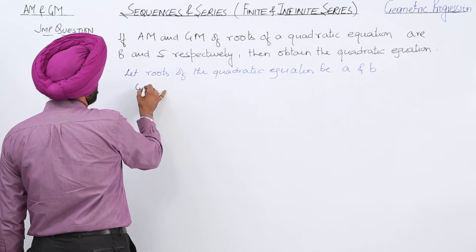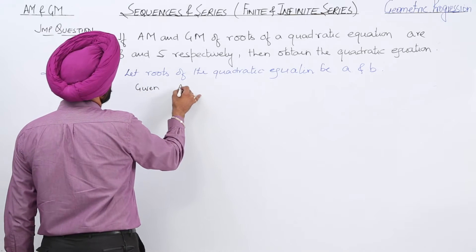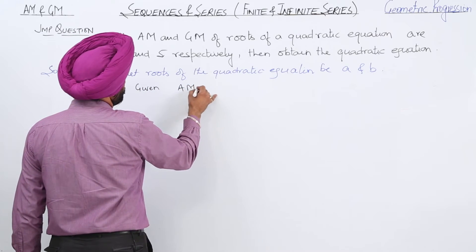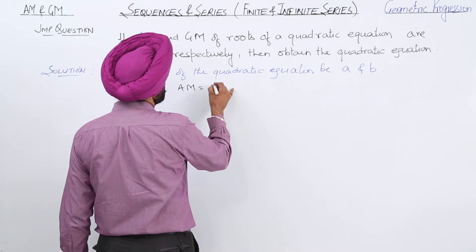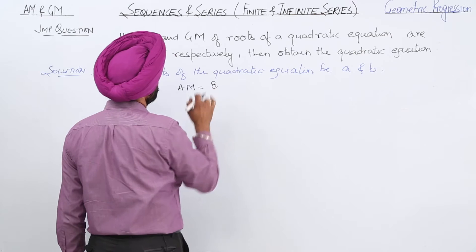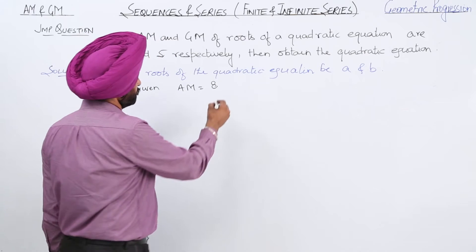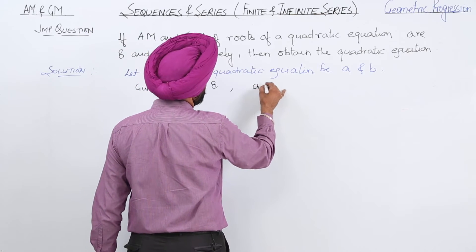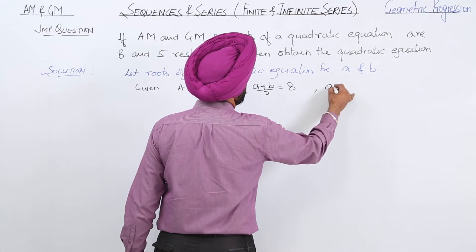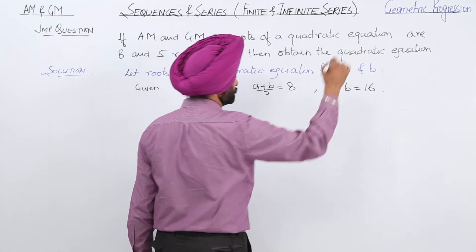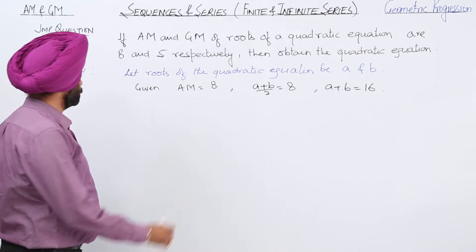Given that AM is equal to 8. Therefore, we can write (a + b)/2 = 8, and so a + b = 16.